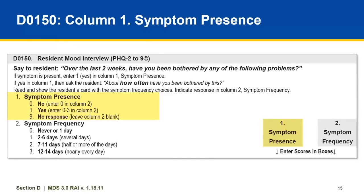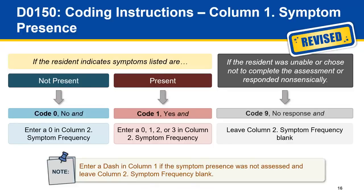Let's understand the coding for symptom presence. Symptom presence is coded as 0 (no), 1 (yes), or 9 (no response). The coding instructions state that the resident should indicate whether the symptom is not present or present. If a resident was unable or chose not to complete the assessment or responded nonsensically, you would code this as a 9 for symptom presence.